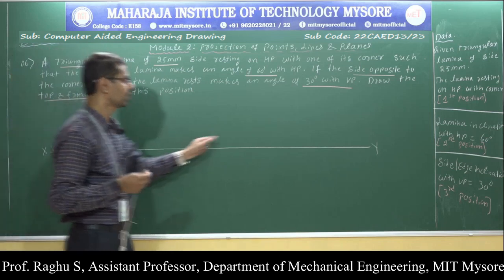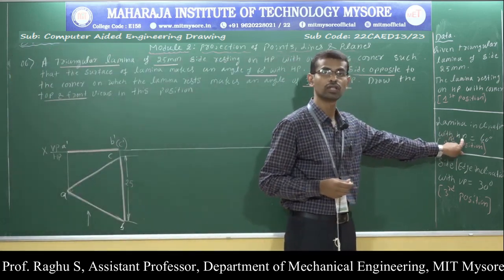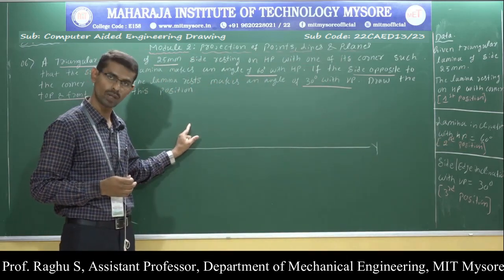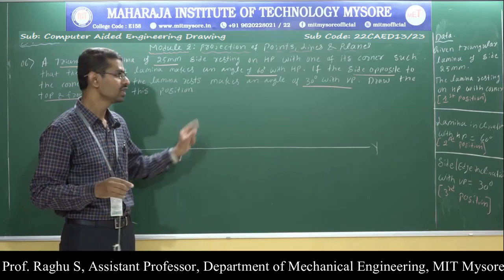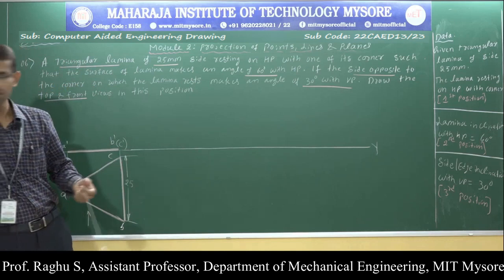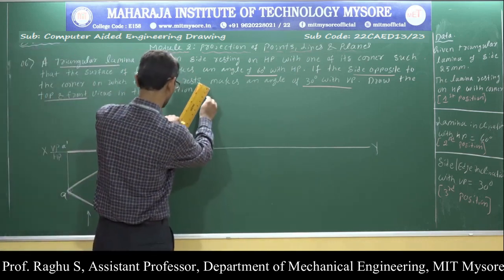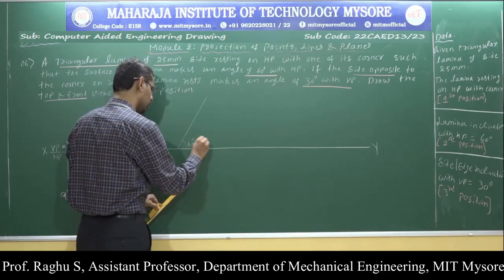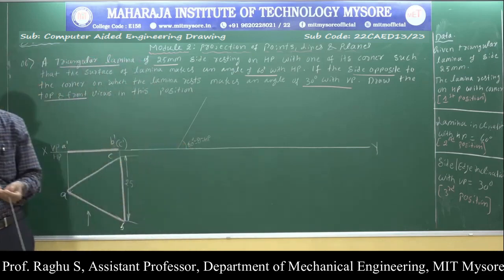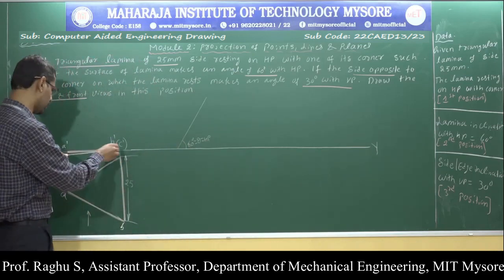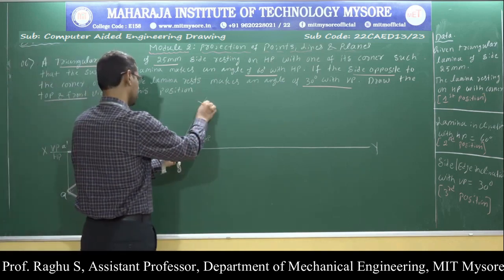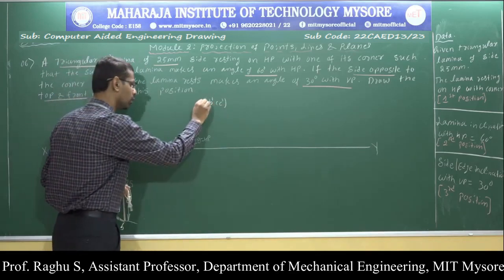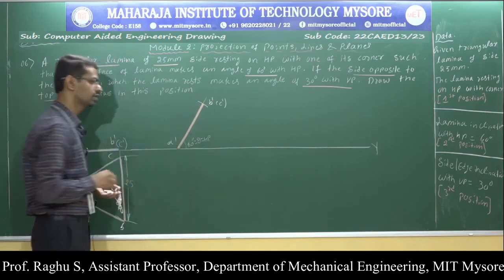To write the second position, I need the lamina inclination with respect to HP. HP inclinations are visible in the front view, which is written on the VP plane. So draw a 60-degree line with respect to HP at any point on the XY line. Using a compass, measure the lengths and cut arcs to get points B dash, C dash, and A dash. Make it dark since this is the view.